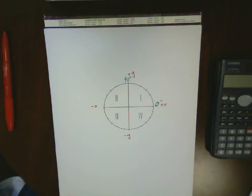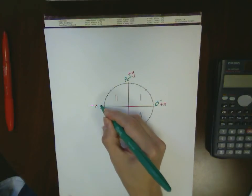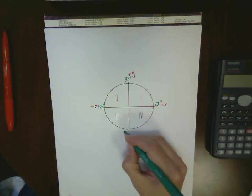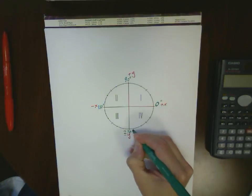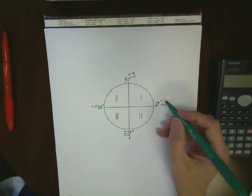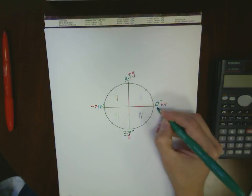Our second quadrant goes from 90 degrees down to 180 degrees. Our third quadrant goes from 180 degrees down to 270 degrees. And finally, our fourth quadrant goes from 270 degrees all the way back up to the x-axis, which is either called zero or 360 degrees.